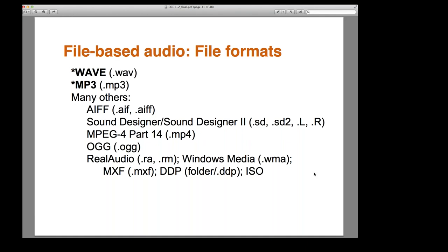There's MPEG-4 Part 14 with extension MP4. There's OGG Vorbis with extension OGG. There's Real Audio — more rare these days but definitely popping up in archives — with extension RA or RM. There's Windows Media WMA, there's MXF, there's DDP, there's ISO. Some of these are more obsolete than others. We found CDRs in our archive that someone had burned a while back with Real Audio files, and I had some trouble finding software to play them back. You can think of it as: my computer doesn't have the right instructions to read those files — the software to decode them.